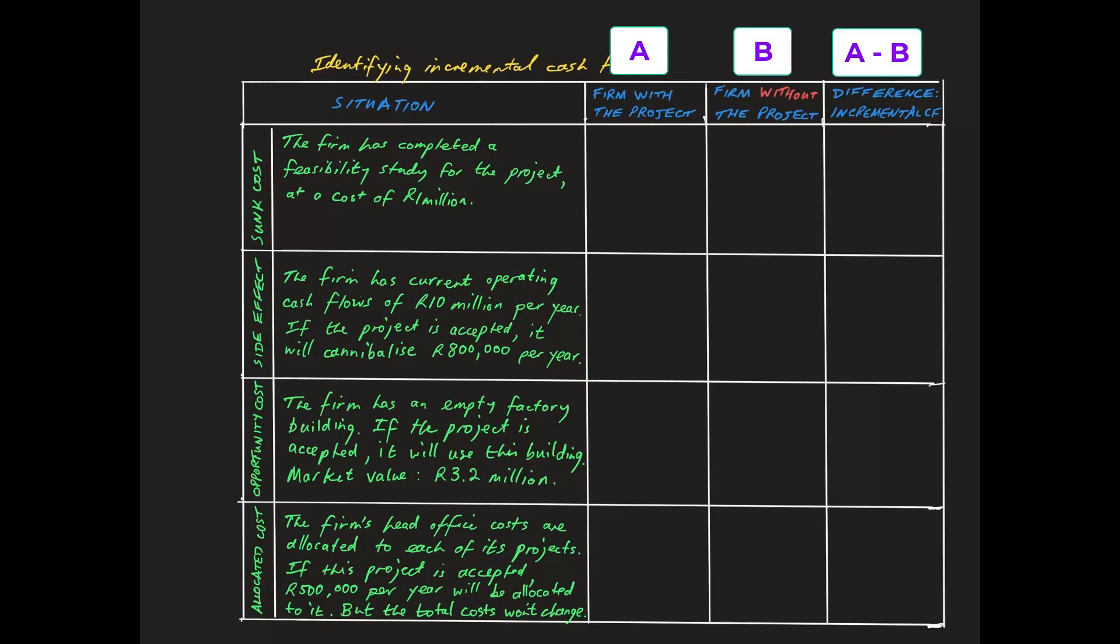Starting with the sunk cost, the firm has contracted for some kind of feasibility study for the project, perhaps by an engineering or environmental consultancy. The cost of the study has already been incurred, so it is locked in. Therefore, whatever the alternative future reality for the firm, accept the project or reject it, there will always be that one million rand cost.